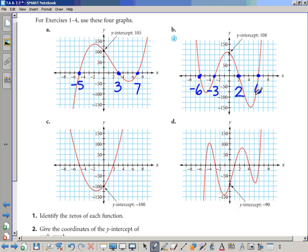Two, give the coordinates of the y-intercept for each. It looks like for the first one, part A, the y-intercept is (0, 105). That's listed right there. And for the second one, the y-intercept is (0, 108). It's important to note that the x-coordinate is 0 when you're looking at the y-intercept.